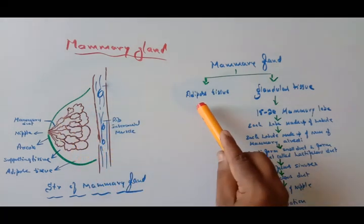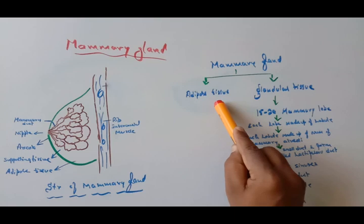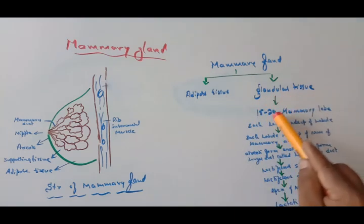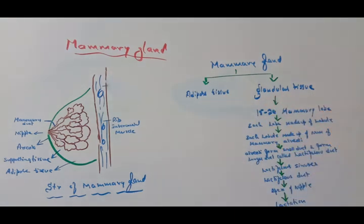Whereas the glandular tissue consists of 15 to 20 mammary lobes. Each mammary lobe forms mammary lobules, and each mammary lobule is made up of mammary alveoli.